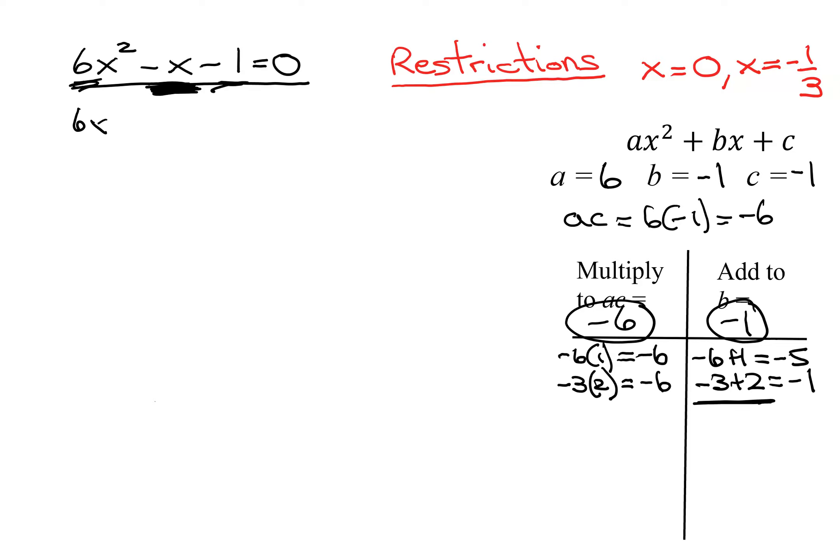So I'm going to write it as 6x squared minus 3x plus 2x minus 1 equals 0. And the reason we do that is we have four terms. How do you factor four terms? By grouping. What do the first two have in common? A 3 and an x.